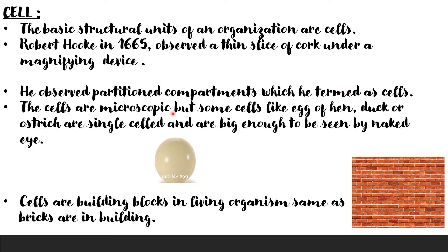The cells are microscopic, but some cells like the egg of a hen, duck, or ostrich are single cells and are big enough to be seen by the naked eye. This is an example of an ostrich egg.